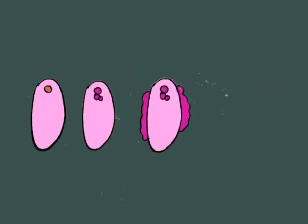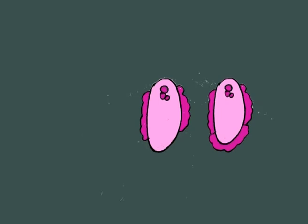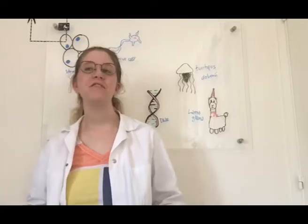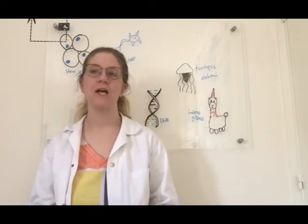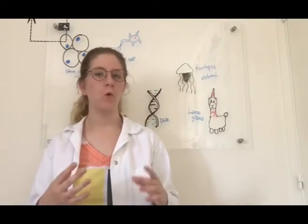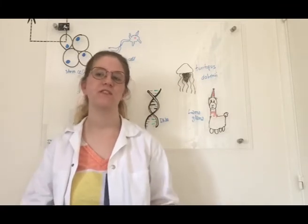The cell will divide and specialise until it becomes mature and differentiated. Differentiation can technically not be reversed, but some organisms are capable of changing the specialisation of their cells thanks to transdifferentiation.